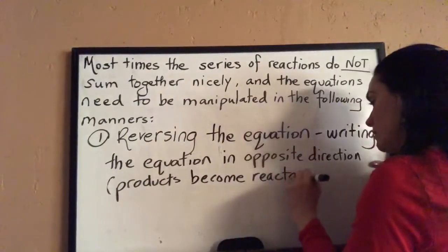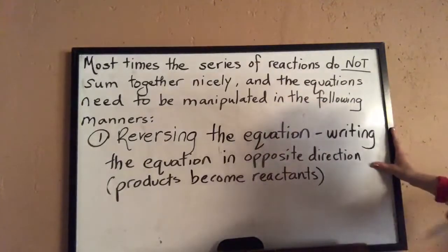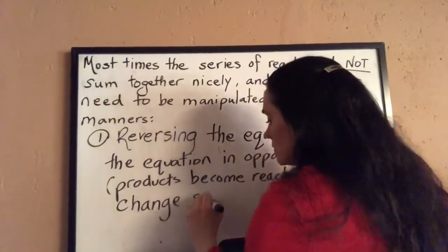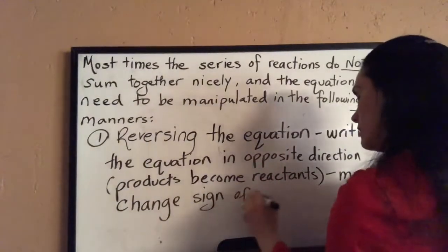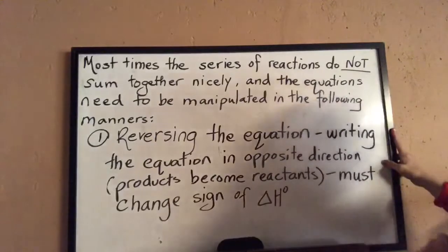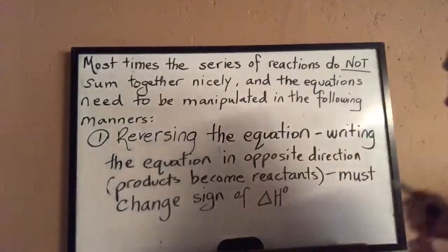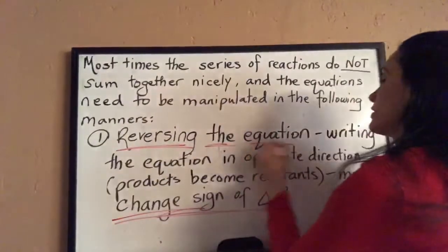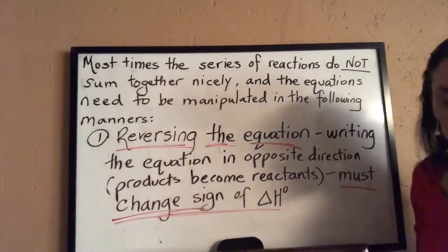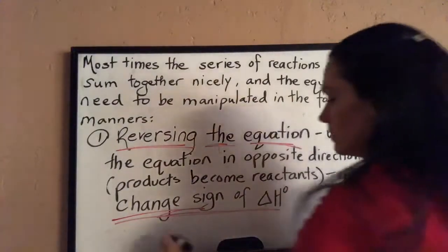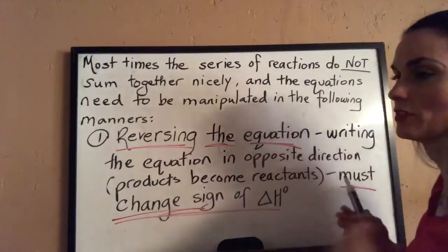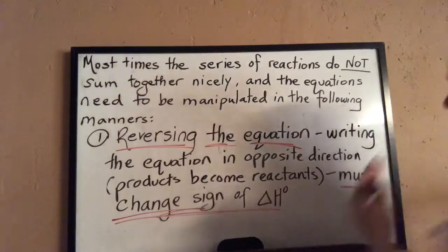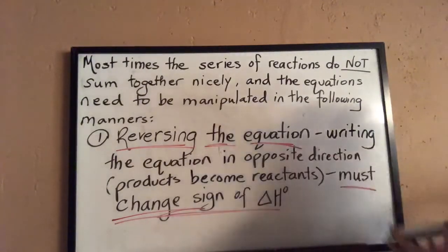When products become reactants, you must change the sign of delta H. So if we reverse the equation, we must change the sign of the heat of reaction. That's the first manipulation. We'll see this in the examples — I'm just giving you the different mechanisms you can use to manipulate the equations before we run through two examples.